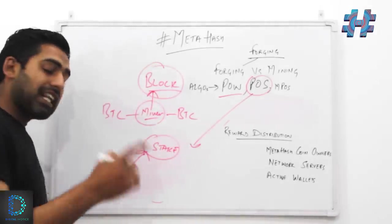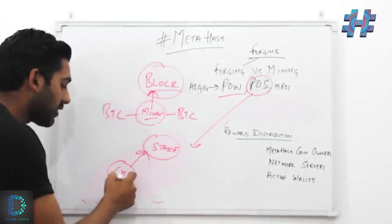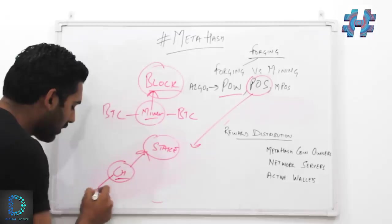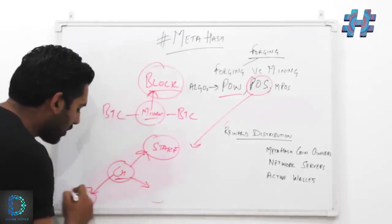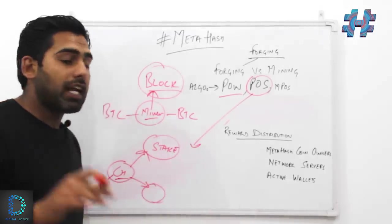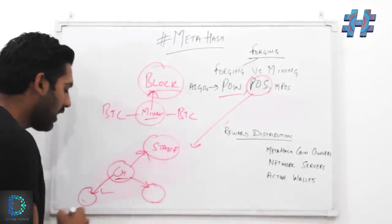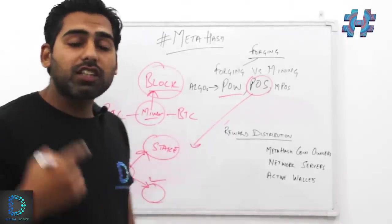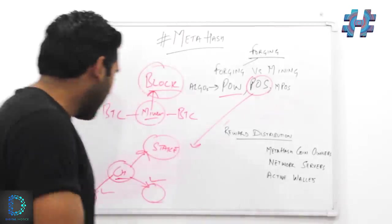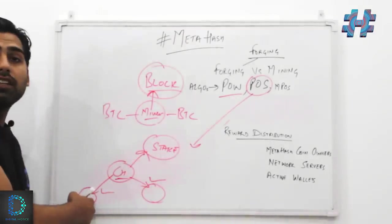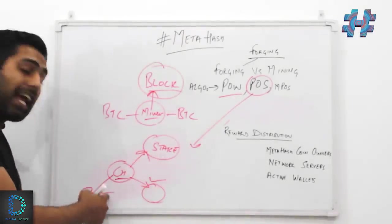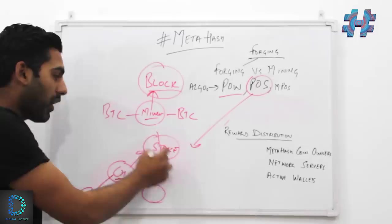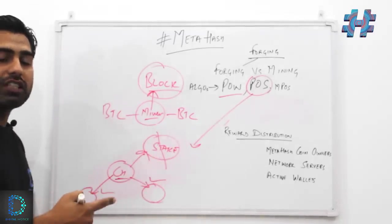After being selected as a block generator, every transaction that you verify is being verified by your left node and the right node in the network. When these say that the transaction verified by you is valid, then the transaction is actually verified. If any one of them says that the transaction you have verified is actually invalid, some of the coins from you that you have put on the stake are being deducted.